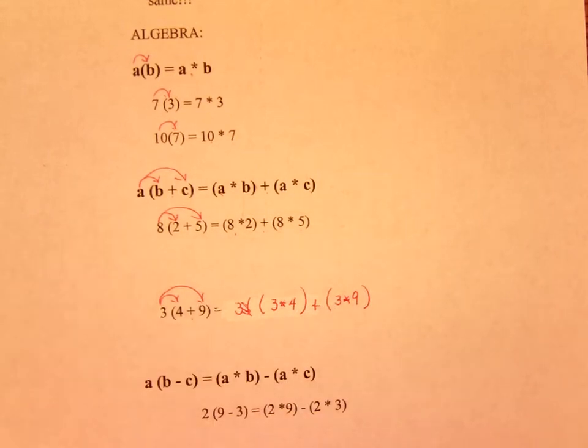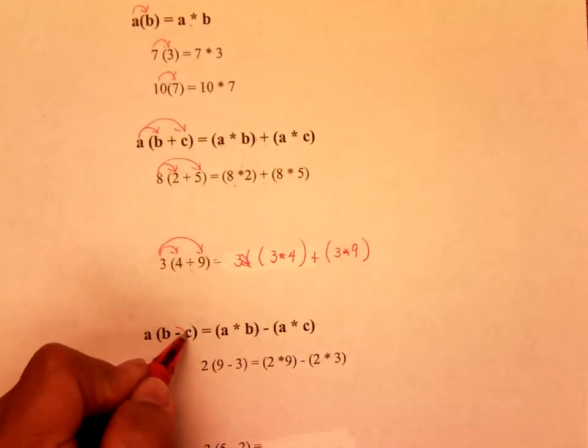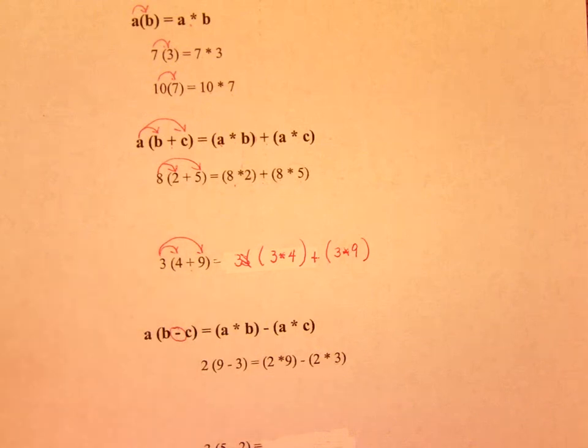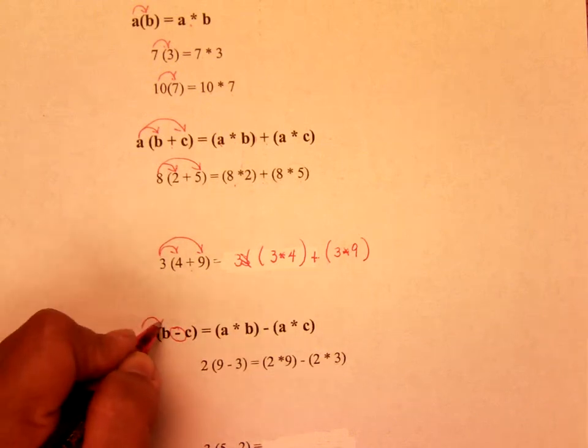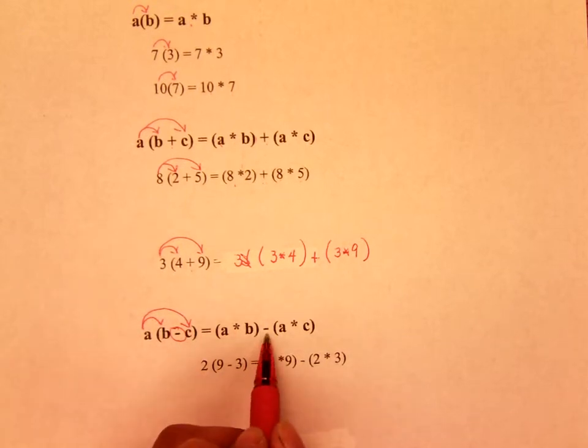So that's for addition. Now for subtraction, it's exactly like addition, except instead of having an addition sign, you have a subtraction sign. So you have A times B, and A times C, and between the two parentheses, you have a subtraction sign instead of addition.